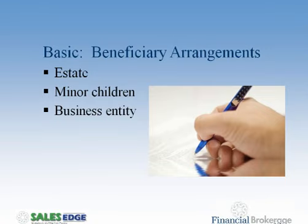When conducting a review, ask clients to bring out their existing policies and take a look at those beneficiary arrangements. This is one of the most common things that gets messed up on a life insurance policy. When I was selling, I heard a lot from folks at the beneficiary section — they'd say 'just put my estate down' or list the estate as a contingent beneficiary. And that's really not something you want to do. There are a lot of policies out there that still have the estate listed as the beneficiary.